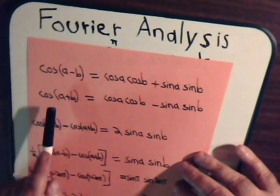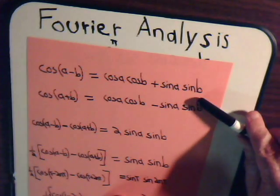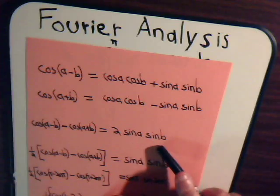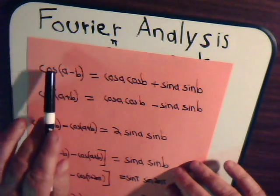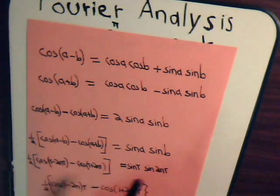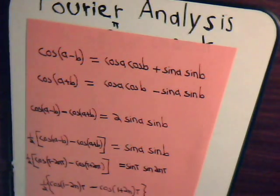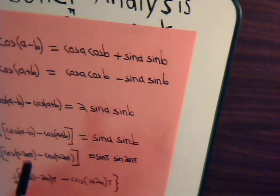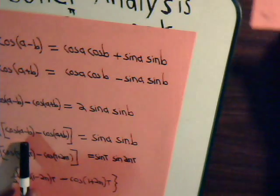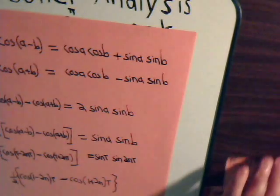So if we subtract these two, these cancel. We have this minus negative this, or two times this expression, and that's equal to the difference of these two. So sine of one function times sine of another function equals cosine of a minus b minus cosine of a plus b.